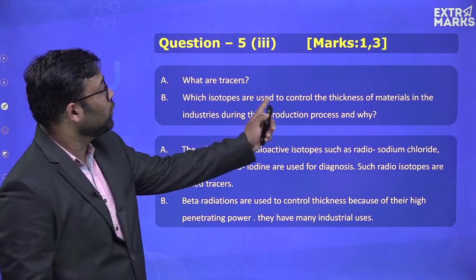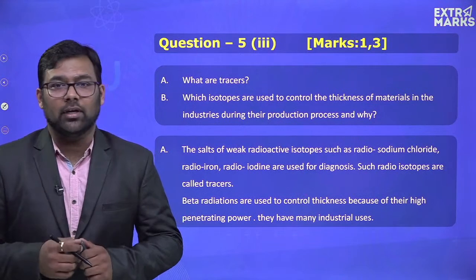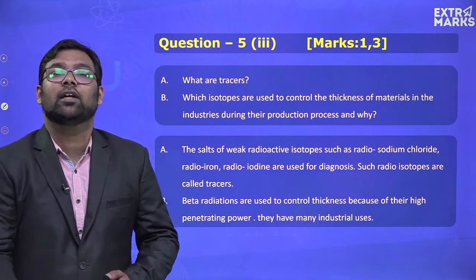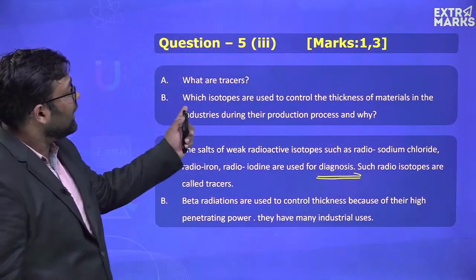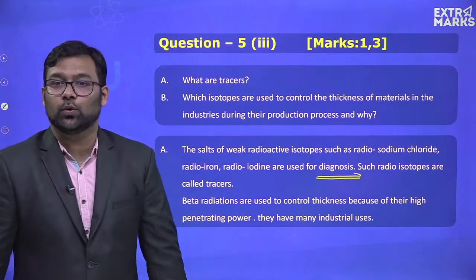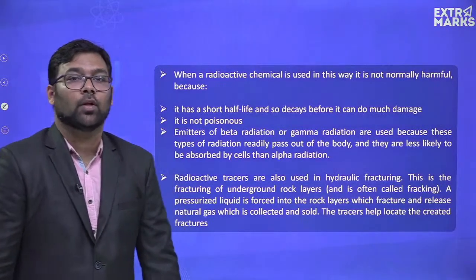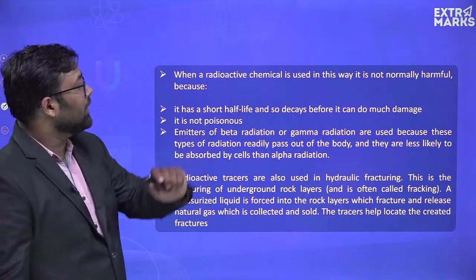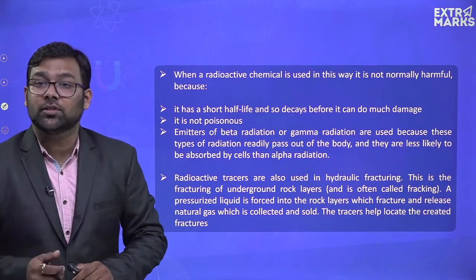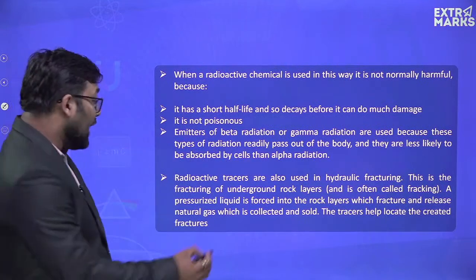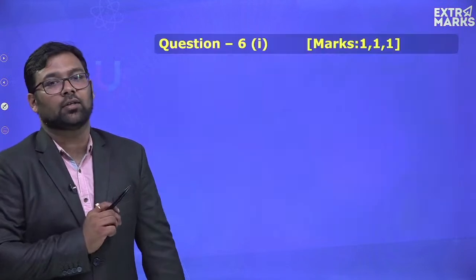What are tracers? Tracers are radioactive isotopes used in medical diagnosis — for example, if you have a kidney problem, tracers are injected and the doctor can follow their path. They are safe because they have a short half-life, decay quickly before causing damage, are not poisonous, and readily pass out of the body. Beta radiation isotopes are used industrially to control the thickness of materials because of their high penetrating ability. Tracers are also used in hydraulic fracturing to locate cracks in rock layers.